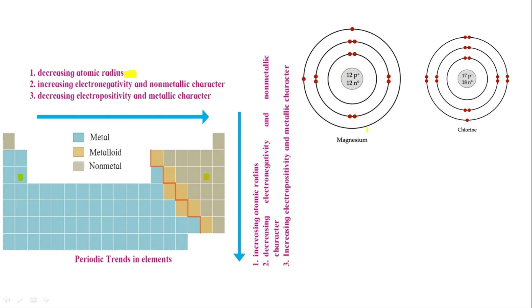Now, what is the reason behind these trends? The reason is the effective nuclear force. What is effective nuclear force? In the center of magnesium, the nucleus has 12 positive charges — it has 12 protons, since the atomic number of magnesium is 12. So magnesium has 12 protons and 12 electrons.